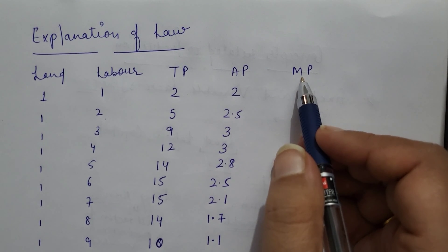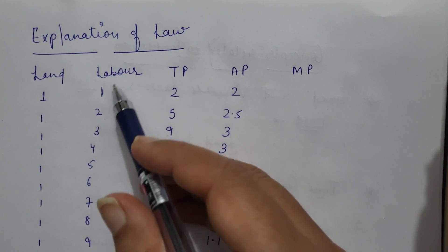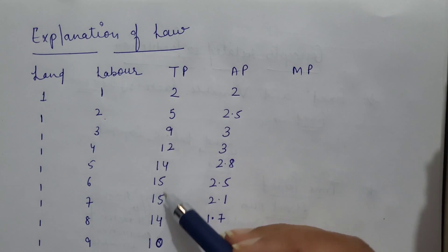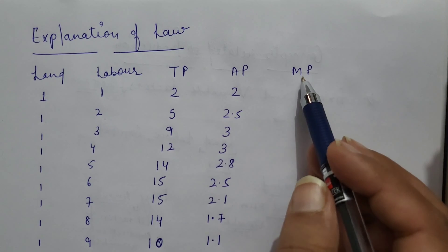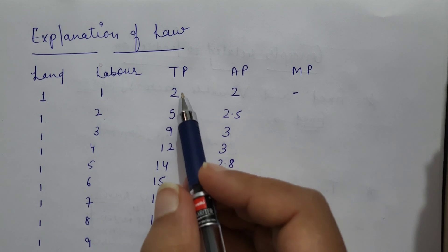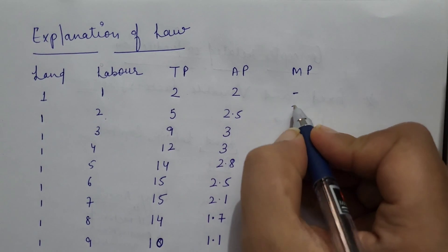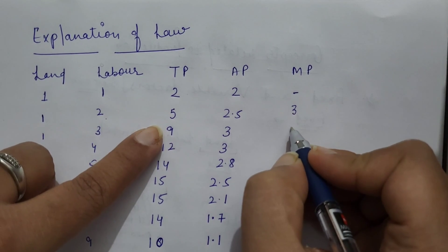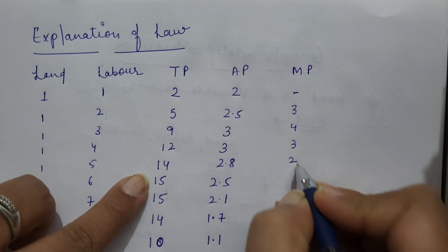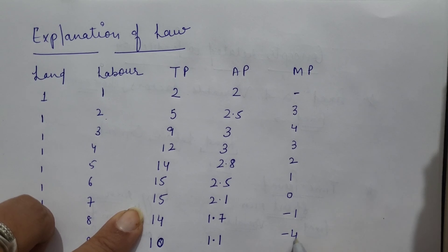The marginal product can be calculated by studying the differences between successive total product values as labor increases. At the first unit it is 2; then the total product goes from 2 to 5, so marginal product is 3; the gap from 5 to 9 is 4. Then it is 3, 2, 1, 0, minus 1, minus 4.